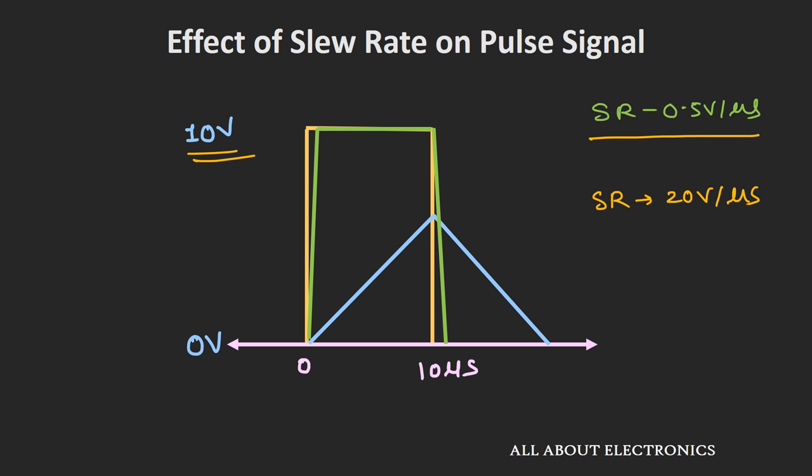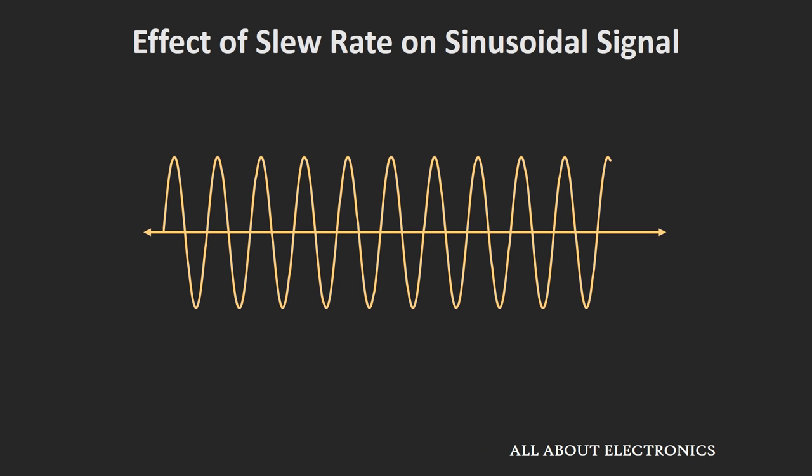This slew rate not only affects square wave pulses but can also affect sine waves. In the case of sine waves, the output signal will get distorted if the signal is changing faster than the slew rate of the op-amp.